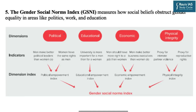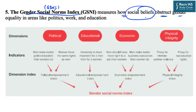The next gender-related index is the Gender Social Norms Index, i.e. GSNI. This is also part of the Human Development Report by UNDP, and it measures how social beliefs obstruct gender equality in areas like politics, work, education, etc. For example, the belief that civil engineering or field postings are not suitable for girls — this is how social beliefs obstruct gender equality in work and education.